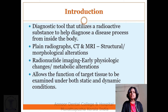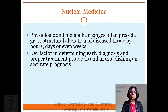Plain radiographs, CT, MRI — structural and morphological alterations can all be studied. Radionuclide imaging is an early physiologic changes and metabolic alteration identifier. Nuclear medicine physiologic and metabolic changes often precede gross structural alteration of disease tissue by conditions such as atherosclerosis, tumors, or diabetes.